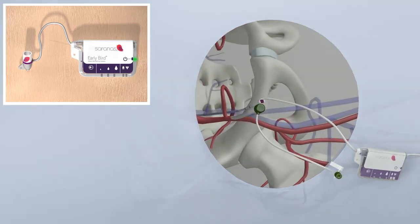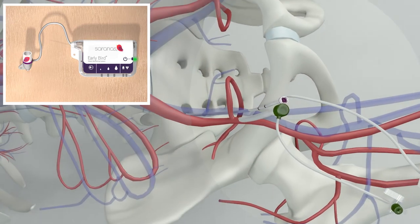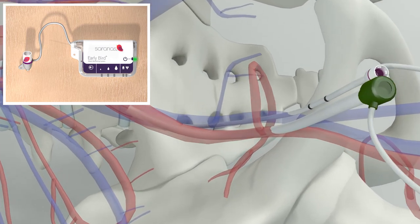The Early Bird is comprised of a bleed detection array along a fully functional 6 or 8 French introducer sheath.